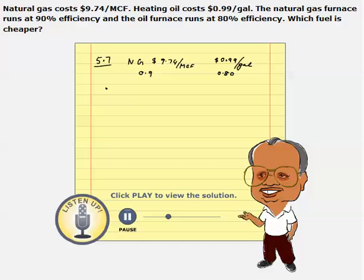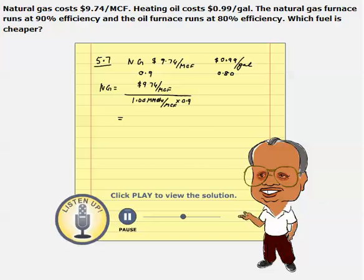So we need to calculate the actual cost and compare the cost. The natural gas actual cost will be cost per unit fuel, which is $9.74 per mcf, divided by the heating value per unit fuel. The heating value for natural gas happens to be 1 million BTUs per mcf. And we multiply by the efficiency in the denominator, which is 0.9. So the natural gas price turns out to be $10.82, or 83 cents, per million BTUs.